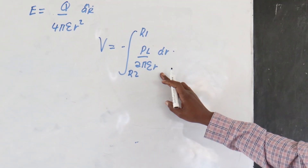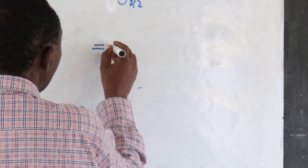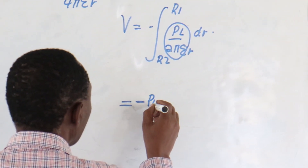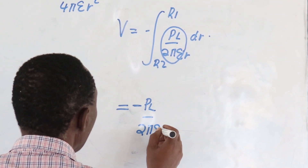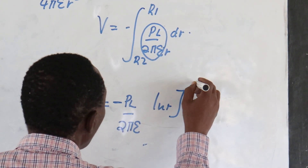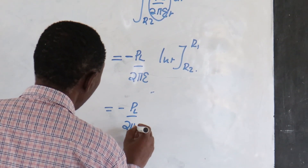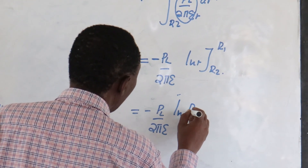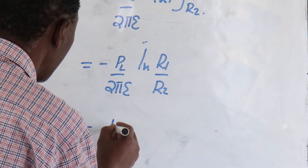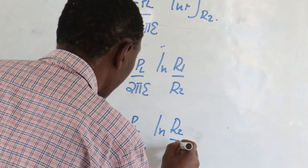Now we are integrating with respect to R. The whole of this is a constant, so this becomes PL over 2πε into ln(R) from R1 to R2, which I can write as minus PL over 2πε × ln(R1/R2).